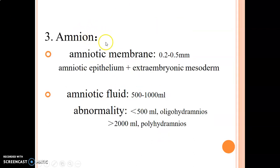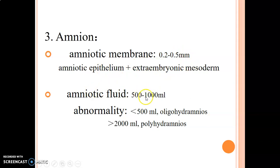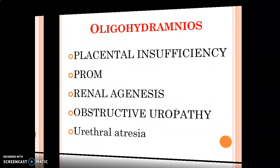Normally the amniotic membrane is 0.2 to 0.5 millimeters, and the amnioblasts form the amniotic epithelium. Less than 500 mils is oligohydramnios; more than 2,000 mils is polyhydramnios.